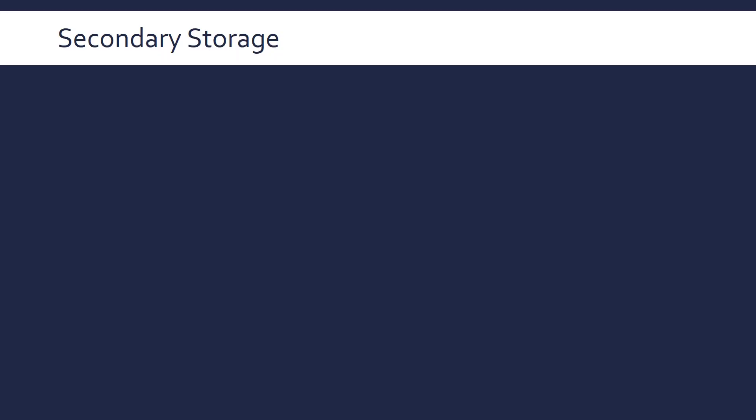We're now going to look at secondary storage, which is any memory device not directly connected to the CPU. Main memory like RAM has its own buses that connect directly to the CPU. Secondary storage, on the other hand, has to go through input/output channels and controllers — it hasn't got a direct channel to the CPU.